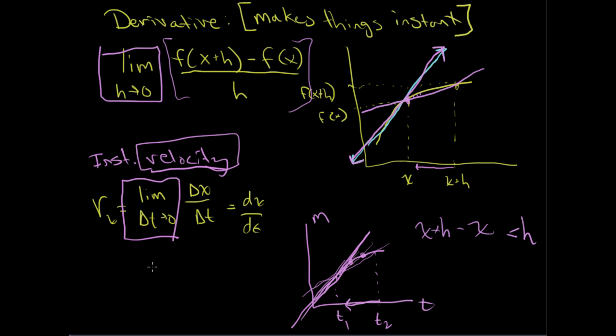And basically, all you're doing is applying this limit. You're just making those averages smaller and smaller so you get a better representation at what is happening specifically at that point.